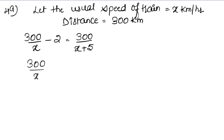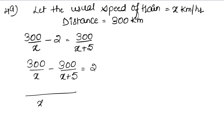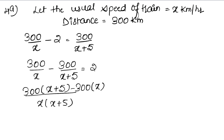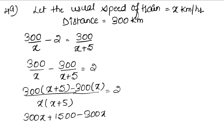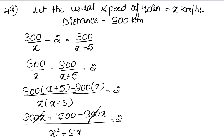Taking x terms to one side: 300 divided by x, minus 300 divided by (x plus 5), equals 2. Opening the brackets gives 300x plus 1500 minus 300x, all over x squared plus 5x, equals 2.